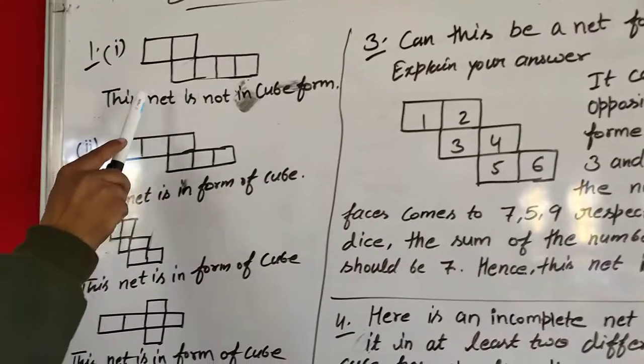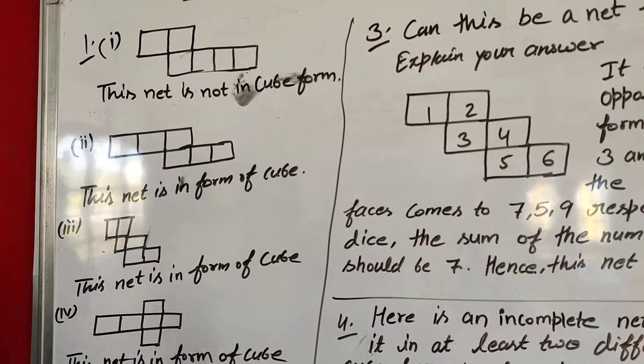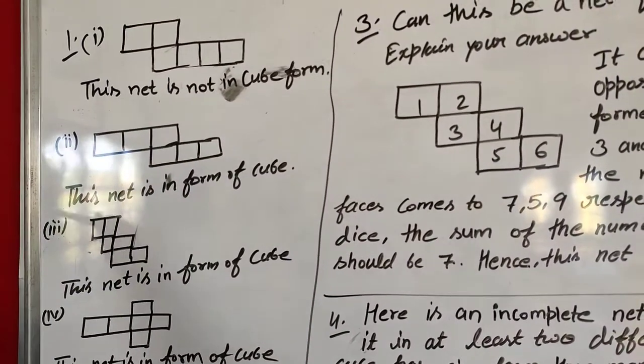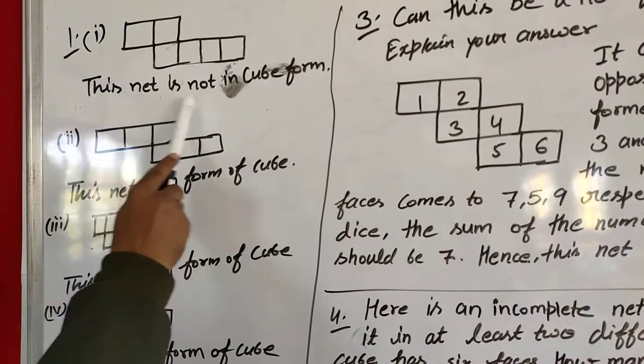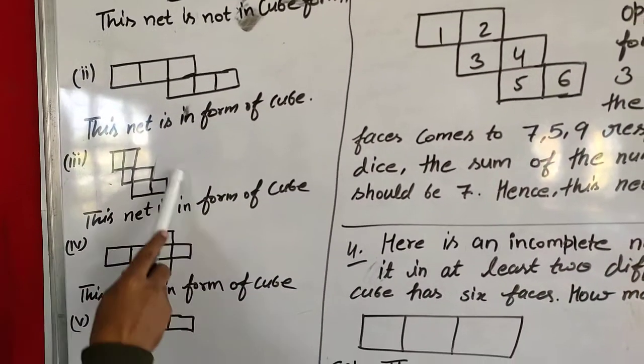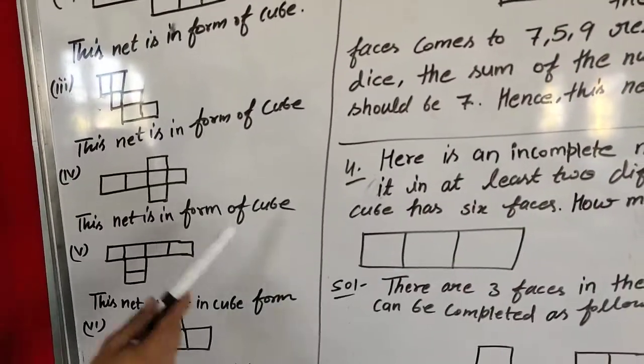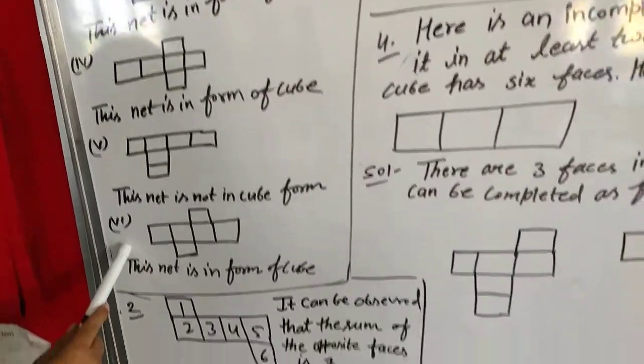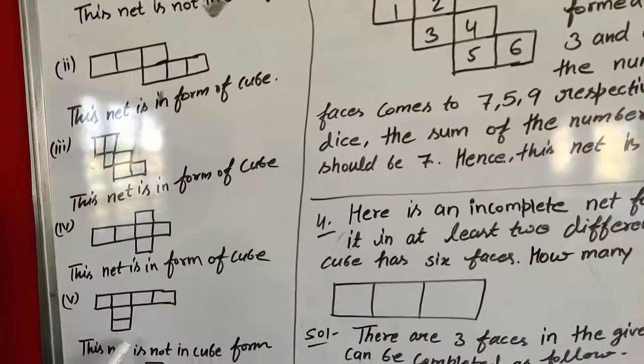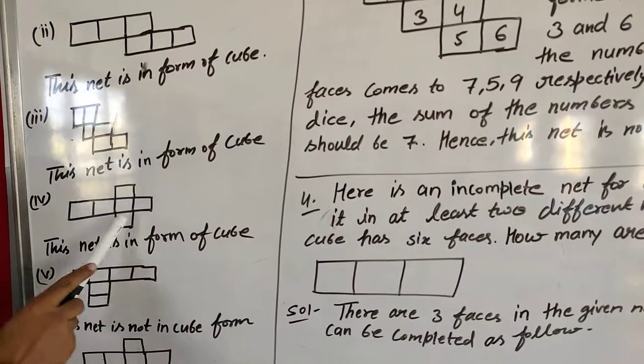First, is it a cube or not? You have to cut it using paper and make the cube. So, first is not in any cube form. Second is in cube form. Third is also cube form. Fourth is also cube form. Fifth is not a cube form. Sixth is cube form. So students, you have to make a cut-out net and try to make a cube.